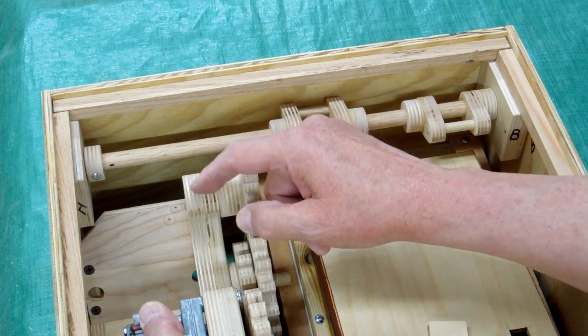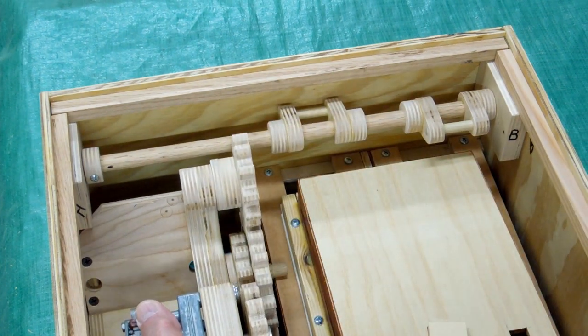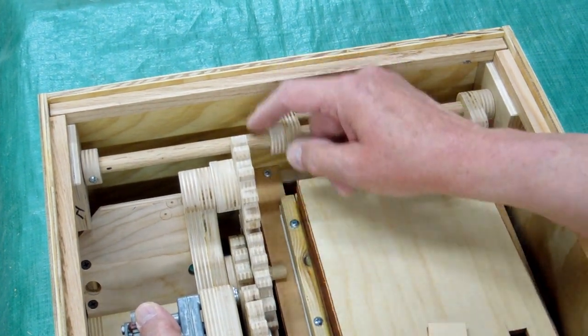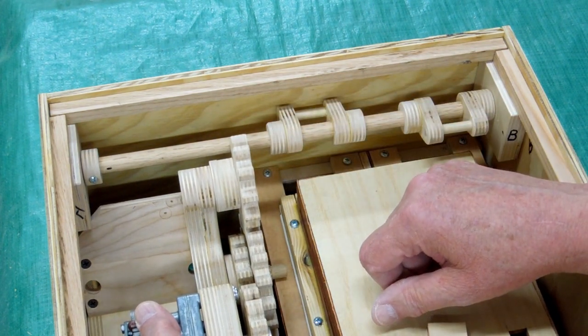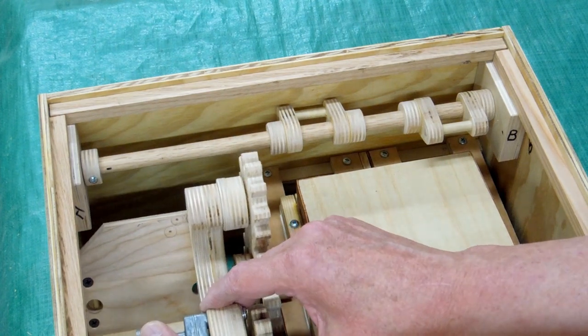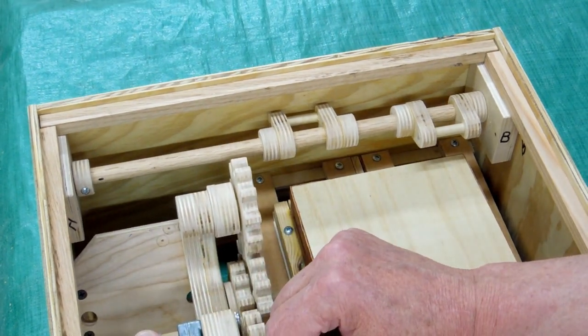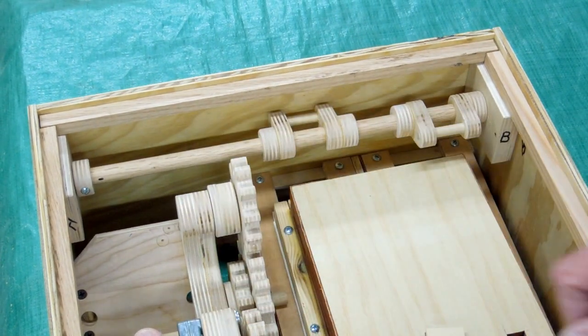And this shaft would pass through this upper bearing block part of the motor mount. But my gear doesn't quite clear. I'm off by about a millimeter. So now, this will be back here, and there will be one more idler gear, one-to-one.